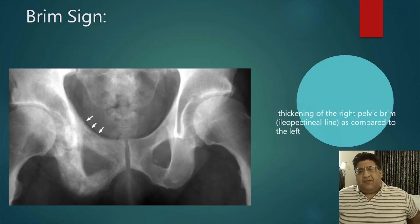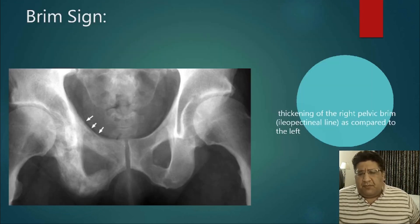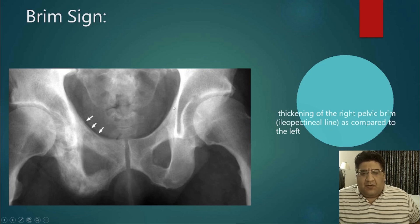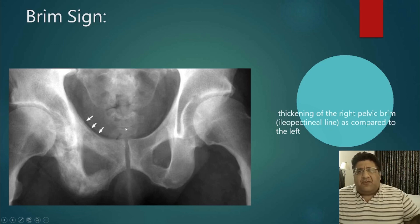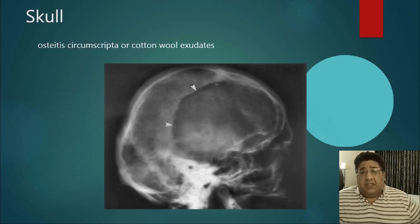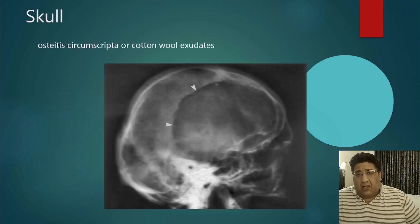The second X-ray sign is the brim sign. The pelvic brim is formed by the iliopectineal line. Unilateral thickening of the iliopectineal line compared to the opposite side is called the brim sign. The third sign is osteoporosis circumscripta — seen in the skull.